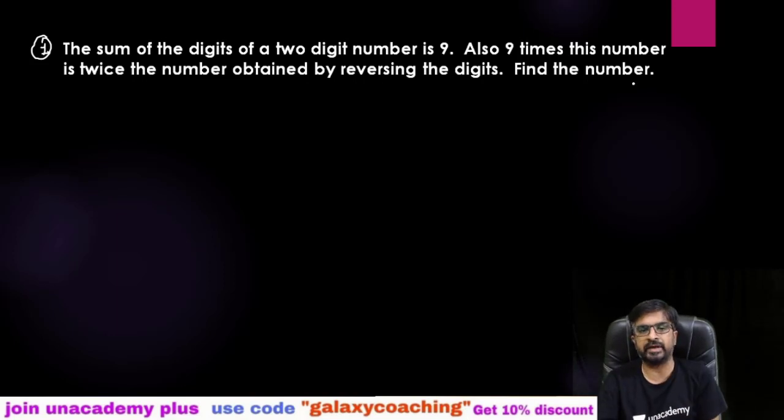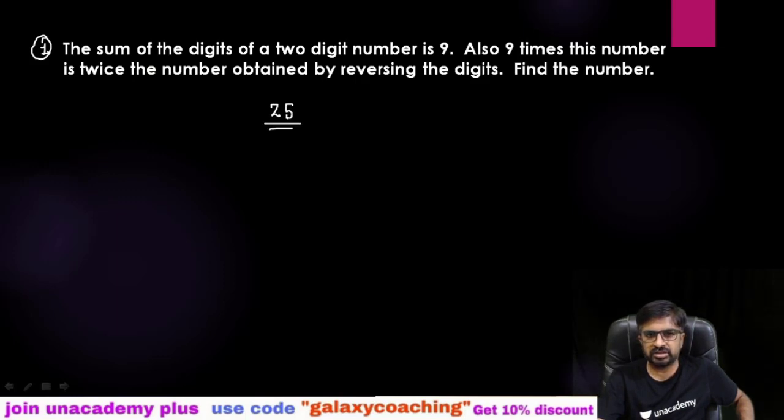First of all, you need to understand what are two digit numbers. When I say 25, this is a two digit number having a unit place and a tens place. So when I want to write down, can I write this as two plus five equals 25? No, no, this is totally wrong. When we want to write down 25 in expanded form, we are writing 20 plus 5.